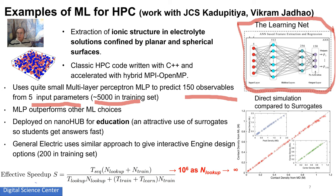They determined the weights with five inputs, 512 in the first hidden layer, 256 in the next hidden layer, and 150 outputs. The multi-layer perceptron outperforms every other machine learning choice such as support vector machines. This allows you to calculate the results of a simulation a million times faster than doing the original computation.